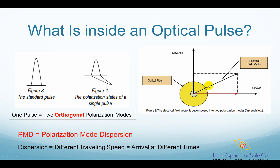The right side picture shows the cross-section view of an optical fiber. The electrical field vector is the polarization direction of the light pulse, but it can be decomposed into two perpendicular polarization modes — one at 0 degree and one at 90 degree. The light pulse can have a polarization at any angle, but it can always be decomposed into two orthogonal polarization modes. In the ideal perfect optical fiber, these two modes travel at the same speed, so there is no PMD. But in the real world, there are many imperfect things in the fiber that cause these two modes to travel at different speeds, thus causing PMD.